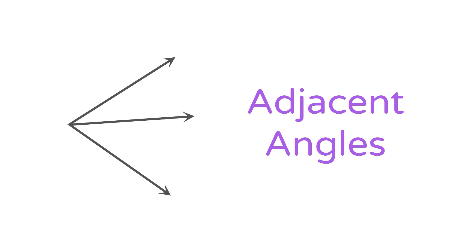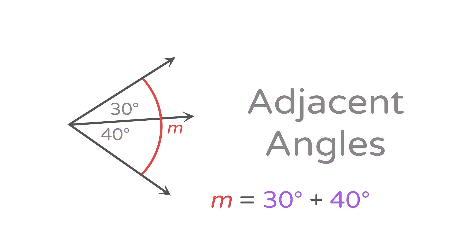Here the smaller angles share a vertex and a side, but no interior points — they are called adjacent angles. The adjacent angles measure 30 degrees and 40 degrees. But what is the measure of the larger angle, which we'll label with the variable m? You can find m by adding the measures of the two smaller angles, so m equals 30 degrees plus 40 degrees equals 70 degrees.